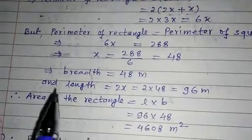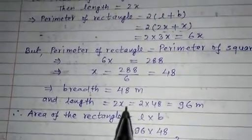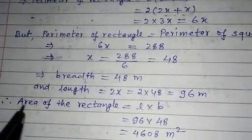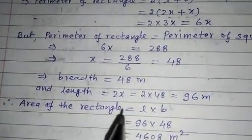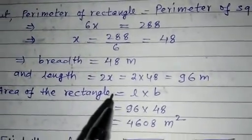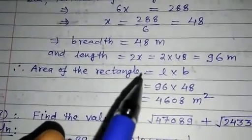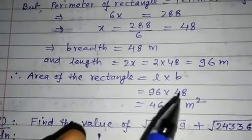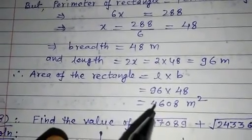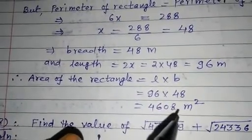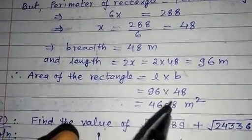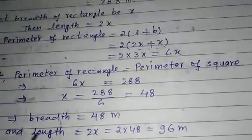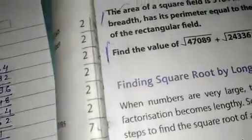And therefore finally to find the area of rectangle. After finding length and breadth, area of rectangle equal to length into breadth, that is 96 into 48, and 4608 meter square. So this is the solution of question number 7.